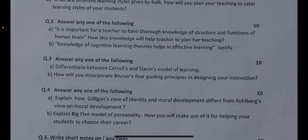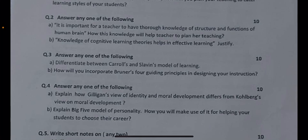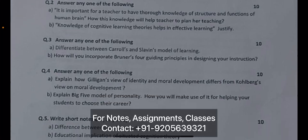Question number two: answer any one of the following. Part A: it is important for a teacher to have thorough knowledge of the structure and functions of the human brain — how will this knowledge help the teacher to plan her teaching? Part B: knowledge of cognitive learning theories helps in effective learning — justify the statement.